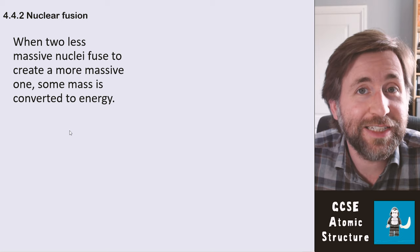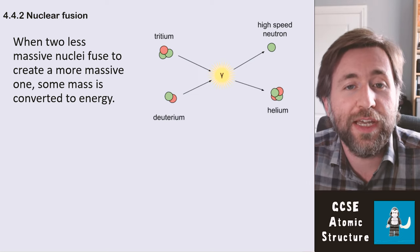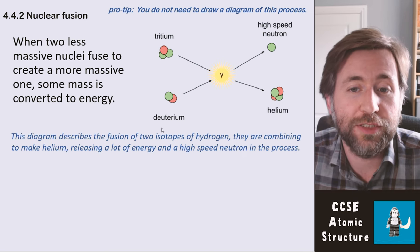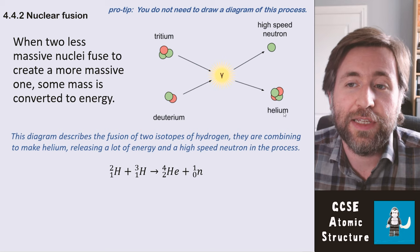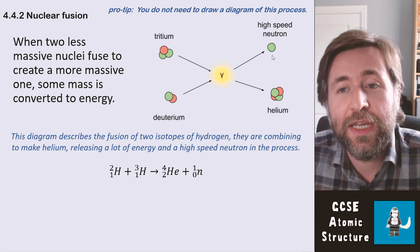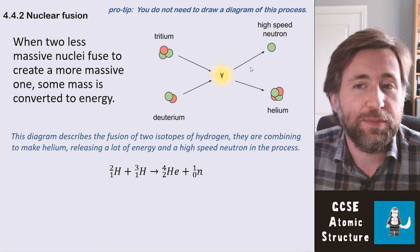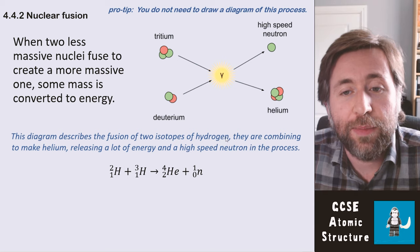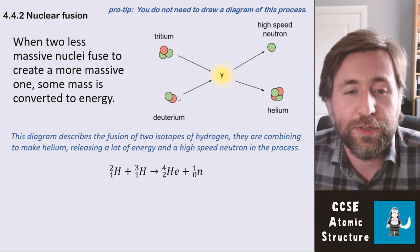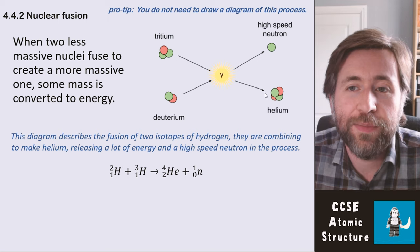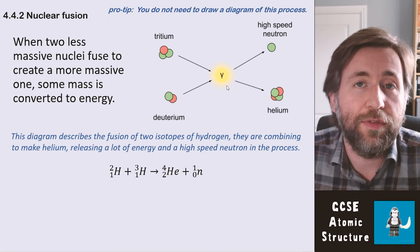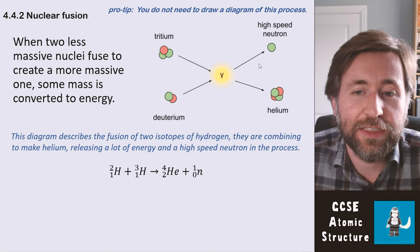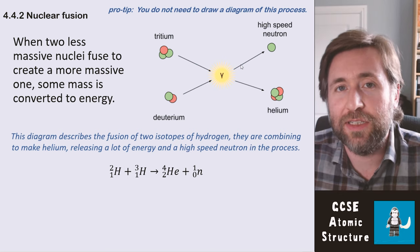Nuclear fusion is where two less massive nuclei fuse to create a more massive nucleus. In this diagram, tritium and deuterium — two isotopes of hydrogen — combine to make helium and release a high-speed neutron. You don't need to draw a diagram of this process, but it can help you understand and memorize it. A lot of energy in the form of gamma radiation is given out in the process, and the neutron carries a lot of kinetic energy, making a fusion explosion particularly devastating.